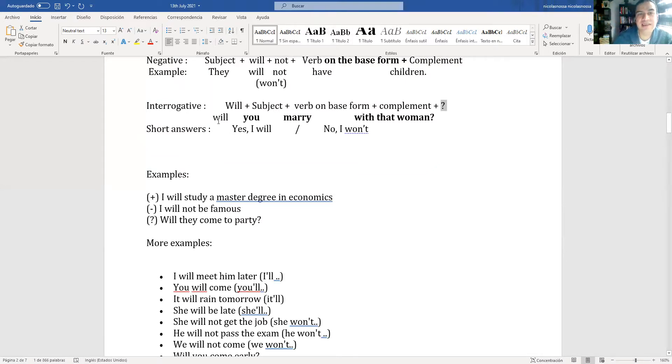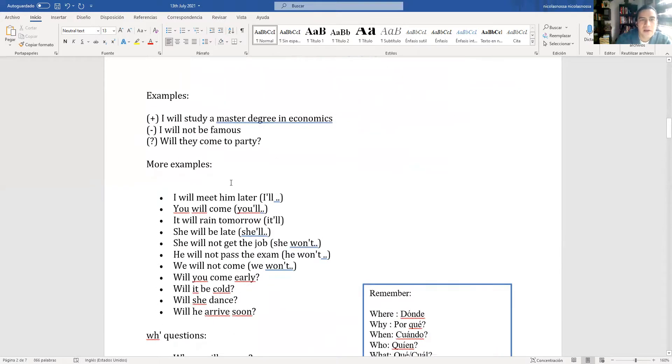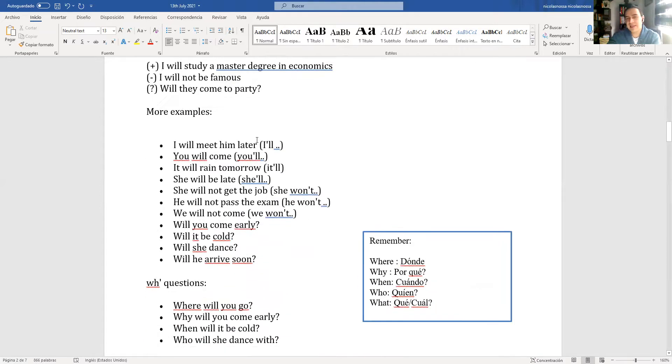Interrogative sentence: will, subject, verb on the base form, complement, and the question mark. Will you marry with that woman? Yes I will. No I won't. Short answers, respuestas cortas. More examples: affirmative sentence, I will study a master degree in economics. Negative: I will not be famous. Interrogative: When will they come to the party?